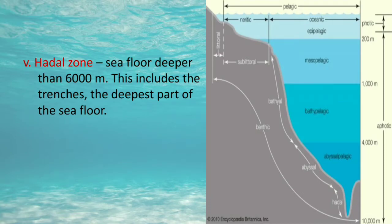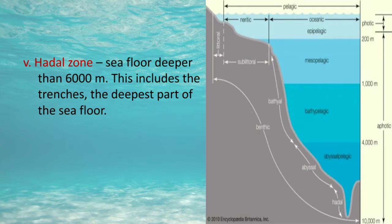To recap the five benthic zones: first, the intertidal zone; second, the sublittoral zone from the lowest low tide mark to the continental break; third, the bathyal zone from the shelf break to 4,000 meters deep; fourth, the abyssal zone from 4,000 to 6,000 meters deep; and fifth, the hadal zone, which is deeper than 6,000 meters and includes ocean trenches, the deepest parts of the seafloor.